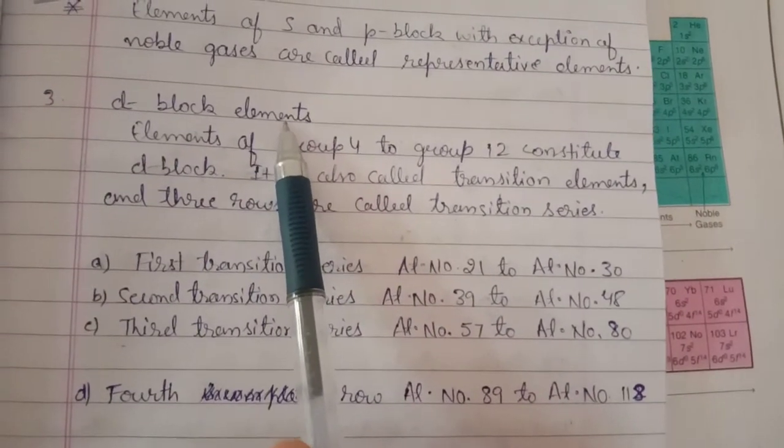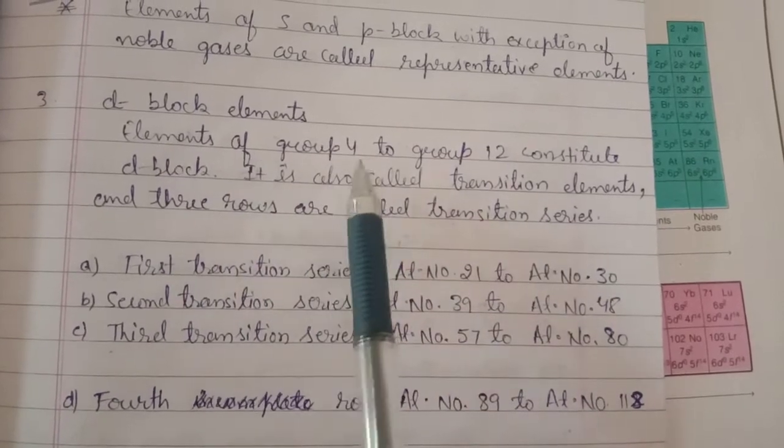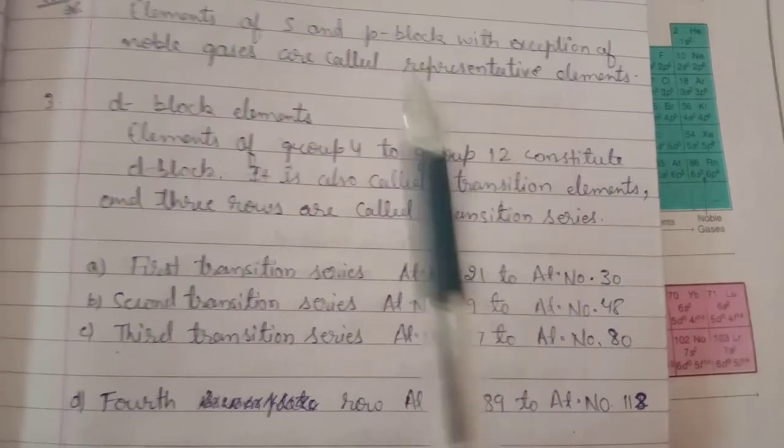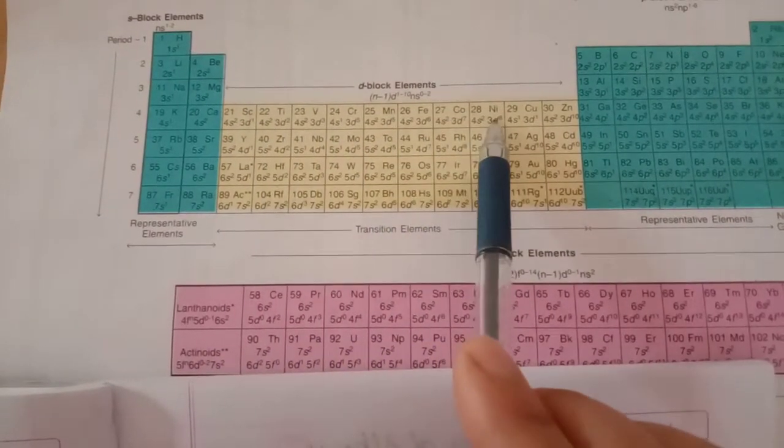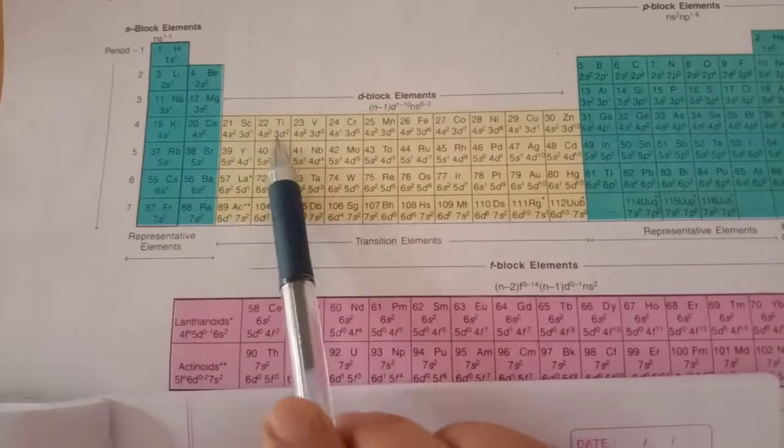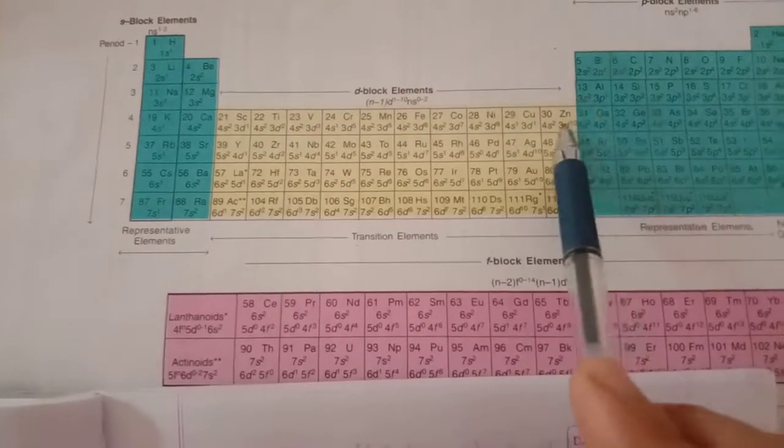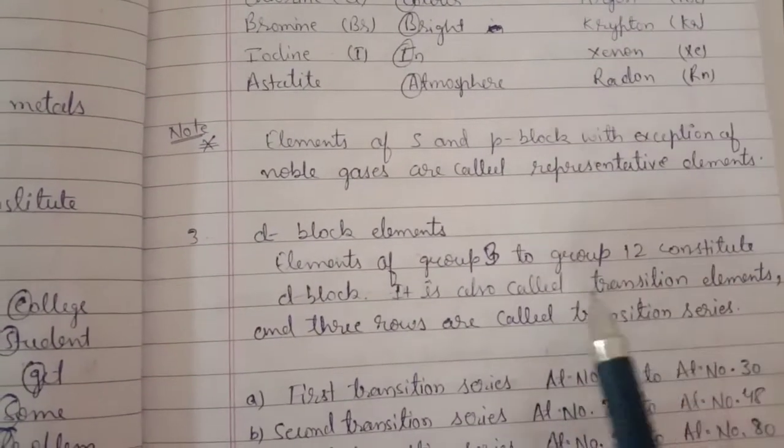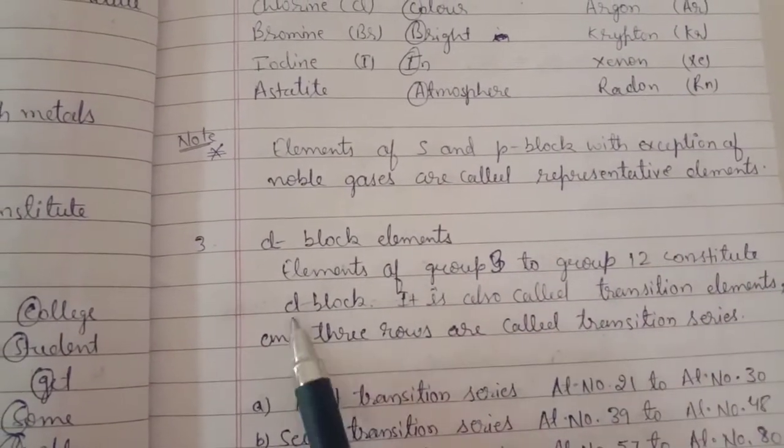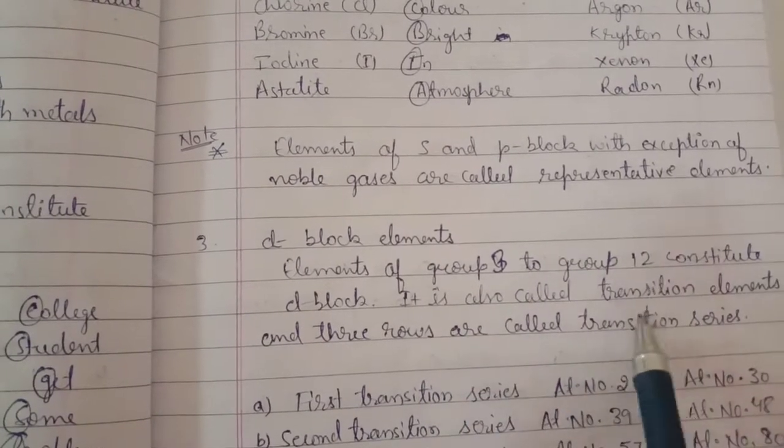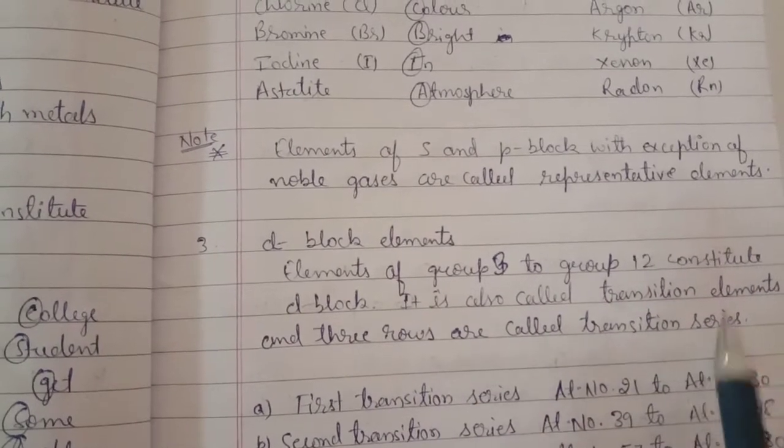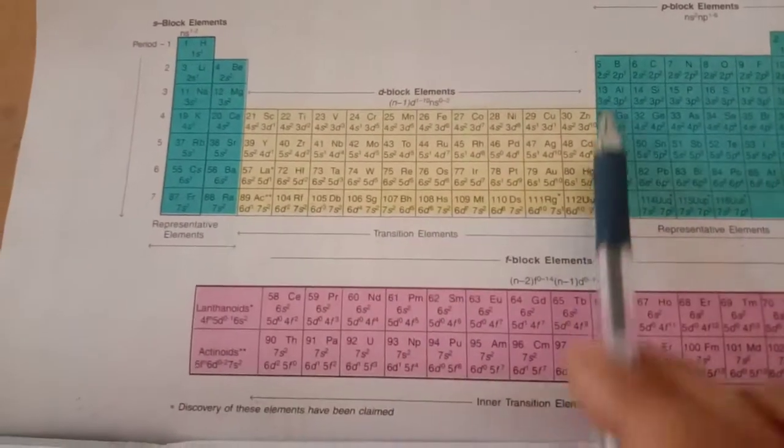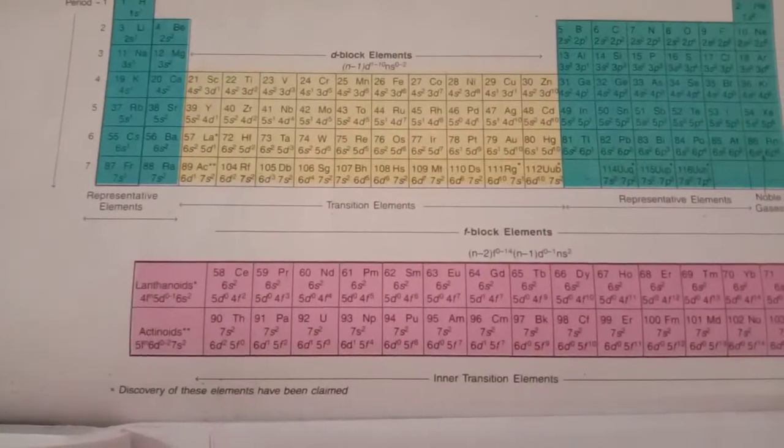Now we've discussed S and P blocks. The D block elements are elements of group 3 to group 12. This yellow part from groups 3, 4, 5, 6, 7, 8, 9, 10, 11, and 12 constitutes the D block. These are also called transition elements, and the rows in this block are called transition series. This whole yellow part represents transition elements.